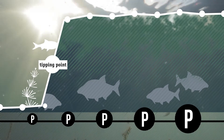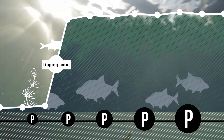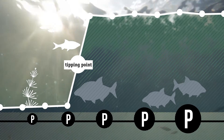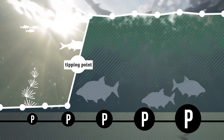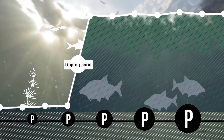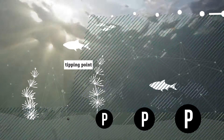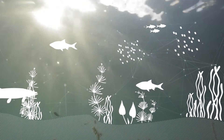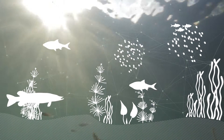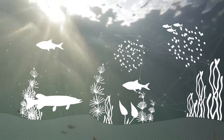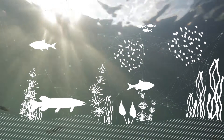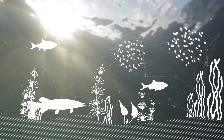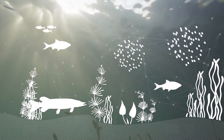By taking measures, you can influence the position of the tipping point — for instance, by changing management or the physical characteristics of the system. With the models PC Lake and PC Ditch, you can predict whether such measures will indeed lead to a clear state with a lot of water plants.